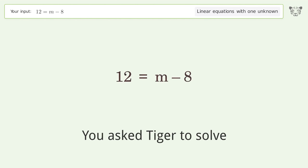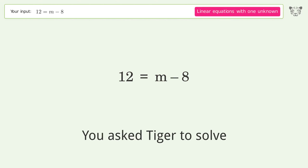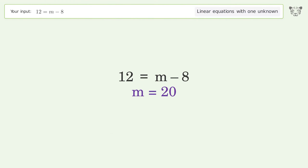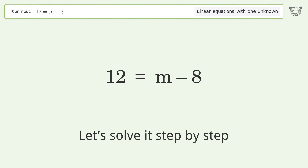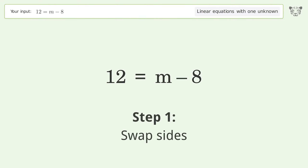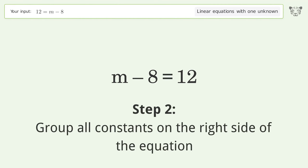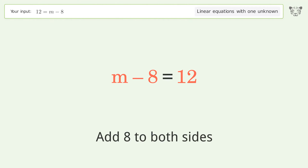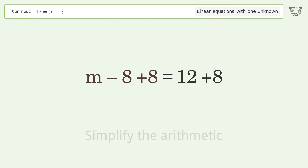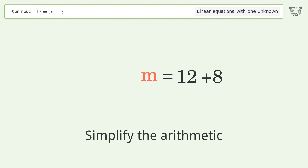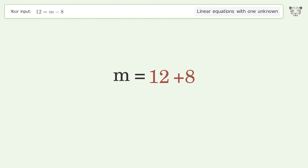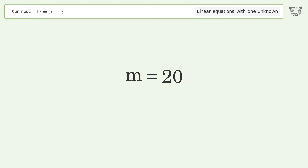We ask Tiger to solve a linear equation with one unknown. Let's solve it step by step: swap sides, group all constants on the right side of the equation, add 8 to both sides, and simplify the arithmetic. The final result is m equals 20.